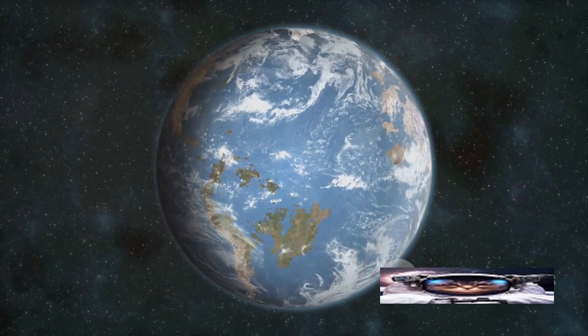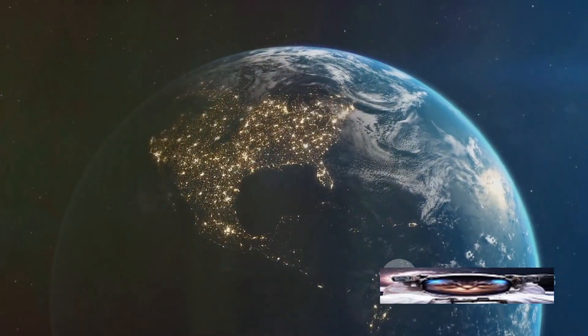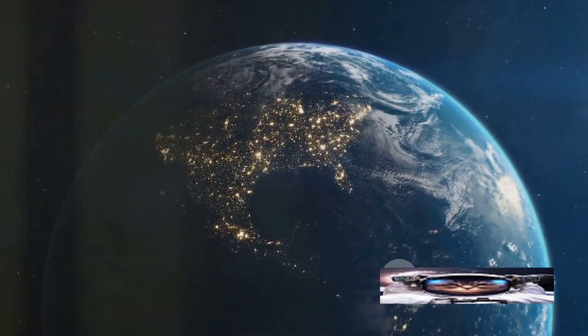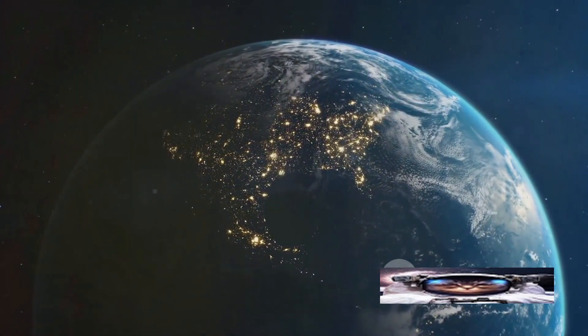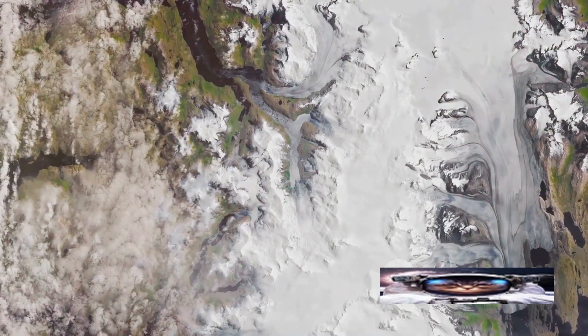Then there's ice melt. Satellites are our eyes in the polar regions, where they monitor the size and thickness of ice sheets and glaciers. The data they collect has shown us that these ice masses are shrinking. This not only contributes to sea level rise, but also disrupts ecosystems and affects global weather patterns.